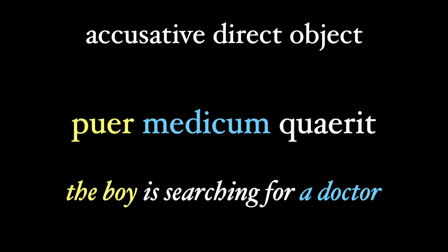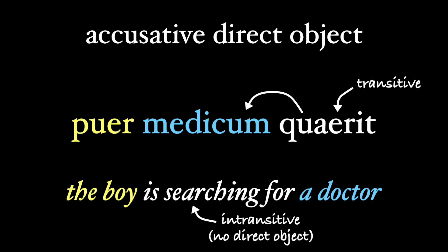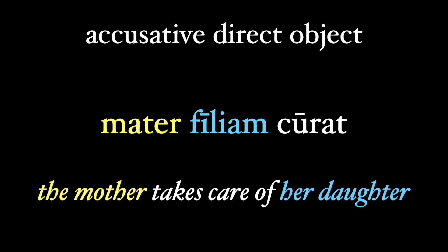Sometimes we see transitive verbs in Latin being relayed into English as intransitive verbs with a preposition. The most common one I see in my beginning classes is the verb 'quairo,' as in the sentence 'puer medicum quaerit' — 'the boy is searching for a doctor.' In Latin, 'quairo' is transitive and takes a direct object, even if 'is searching' in this case is intransitive in English. We need to include the preposition 'for' in English to render the Latin correctly. Another example: 'Mater filiam curat' — 'the mother takes care of her daughter,' where we include 'of' in our translation of 'curat.'